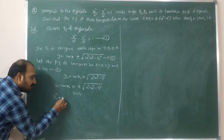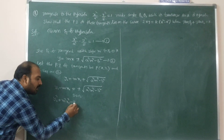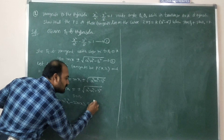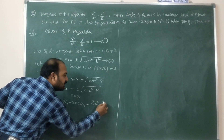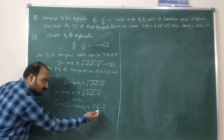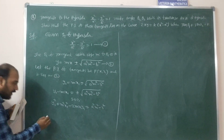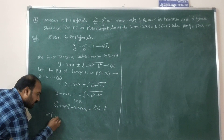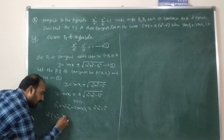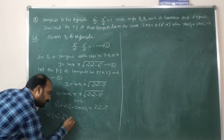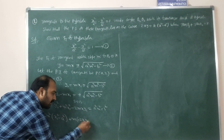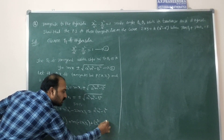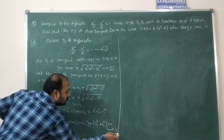Squaring both sides: y₁² + m²x₁² - 2mx₁y₁ = a²m² - b². Taking all terms to one side and grouping by powers of m: m²(x₁² - a²) + m(-2x₁y₁) + (y₁² + b²) = 0. This is equation 3.